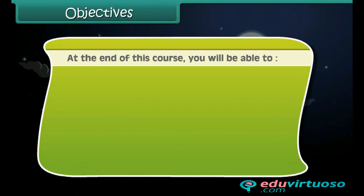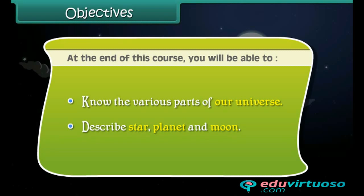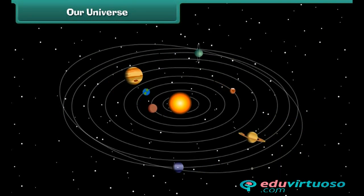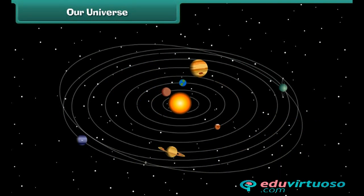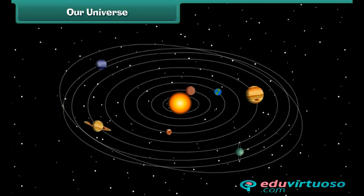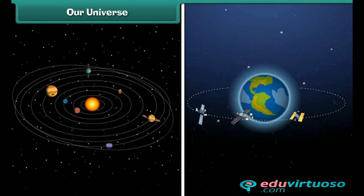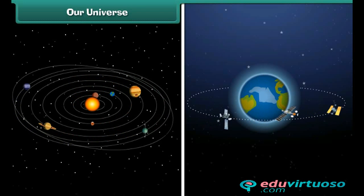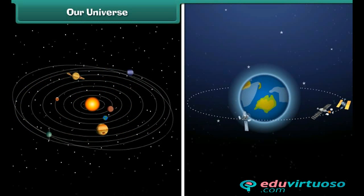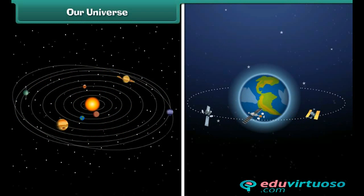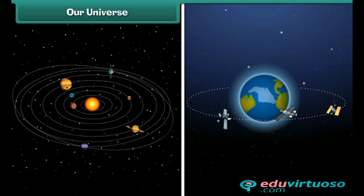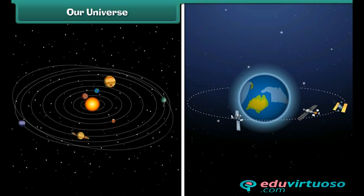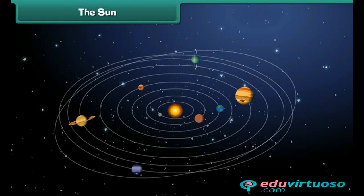Friends, all that we see in the sky is just a part of the universe. There are many stars, planets, and satellites in the universe. They all appear to be very small because they are very far from us, but actually they are very large in size. Do you know that our planet Earth is also a part of the universe?